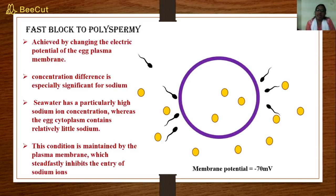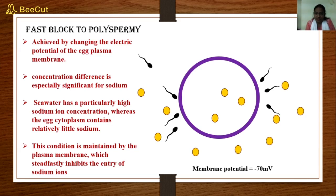The fast block to polyspermy is achieved by changing the electric potential of the egg plasma membrane. Two facts to consider: first, the plasma membrane is a selectively permeable membrane; and second, fertilization in sea urchin is external, meaning both male and female gametes are released into the environment — seawater. The ionic concentration inside the egg is different from outside, most notably for sodium ions, which are more concentrated in the external environment.